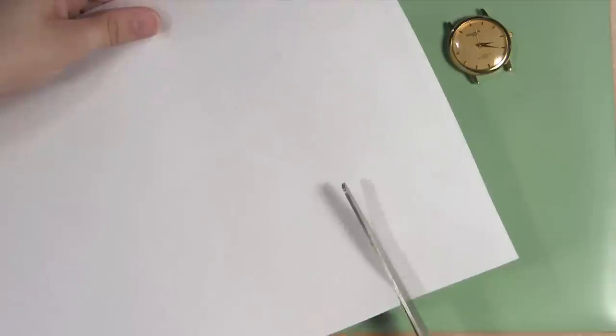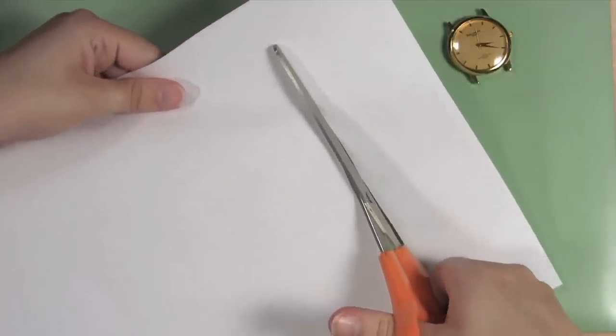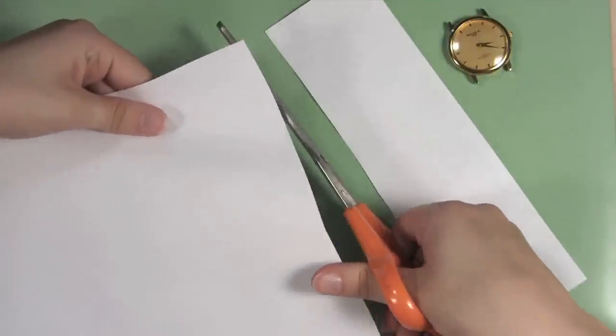After you have determined the width of the watch band, you need to determine what length will fit you. Take your piece of paper and cut a strip off that is about two inches wide and long enough to wrap around your wrist with extra paper at the end.